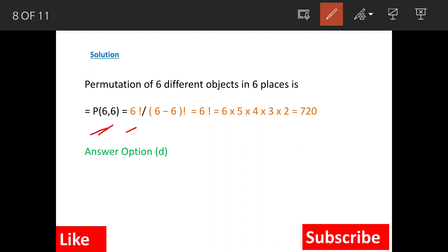The formula is factorial n divided by factorial n minus r. So it is factorial six divided by factorial six minus six. When we solve this, it becomes factorial six divided by factorial zero. The factorial zero is equal to one.